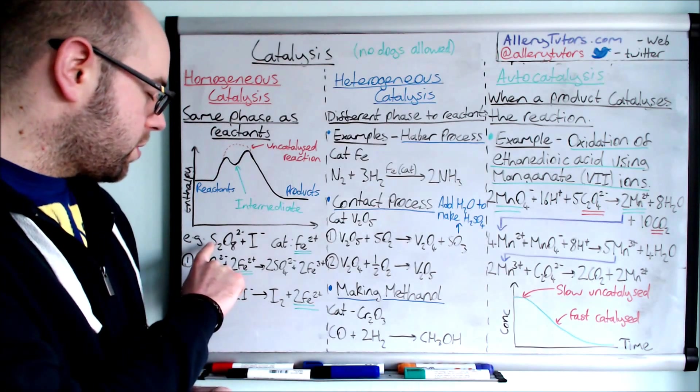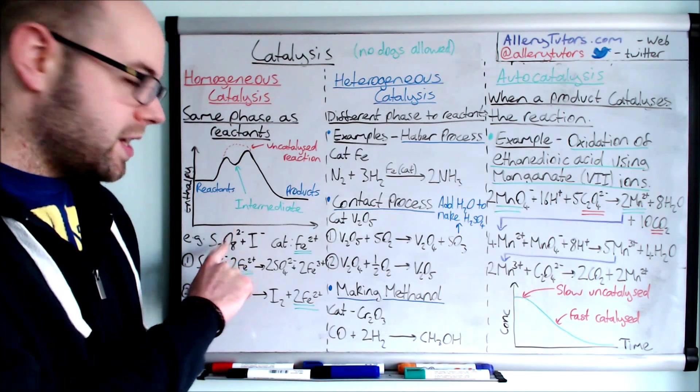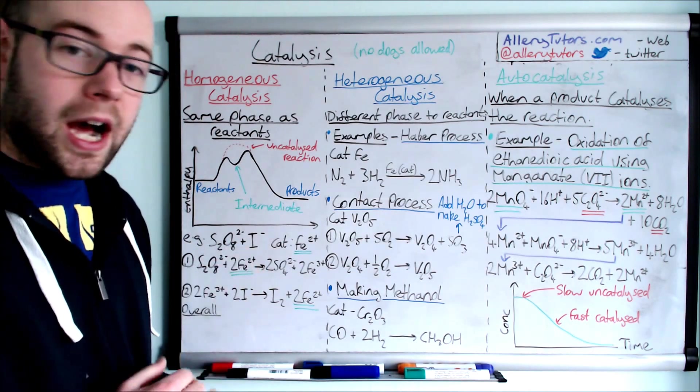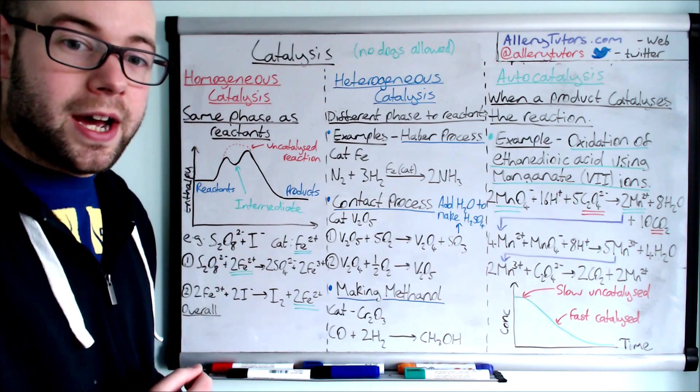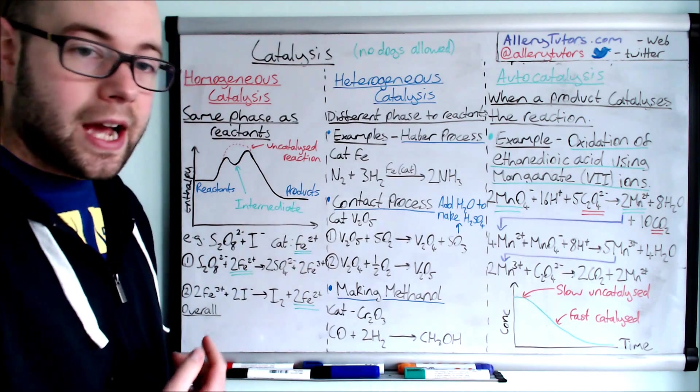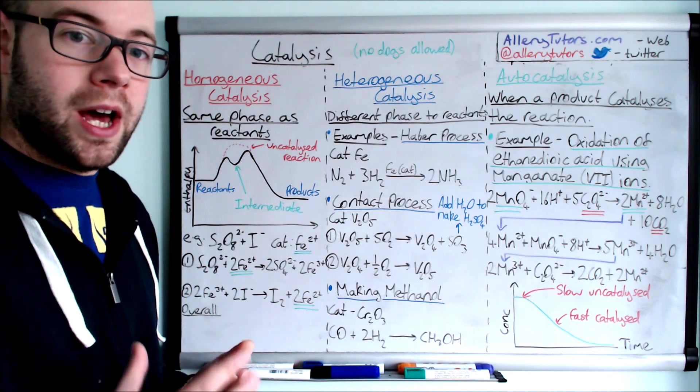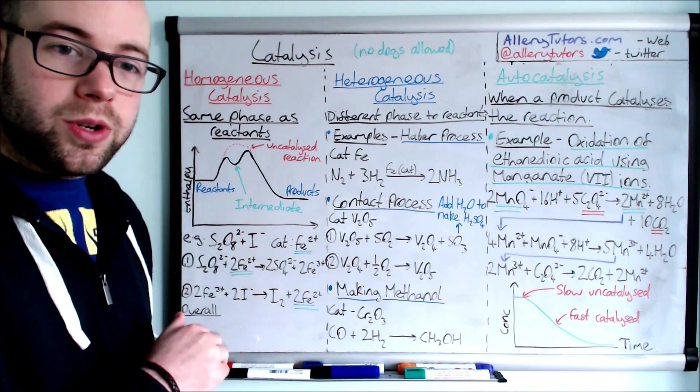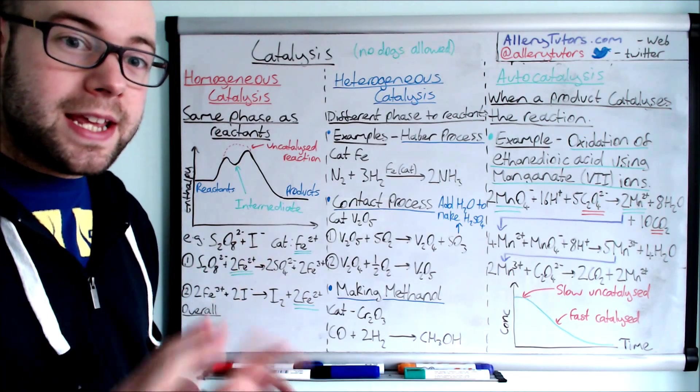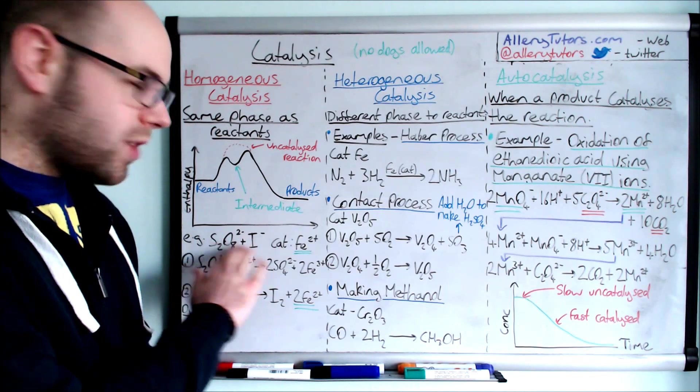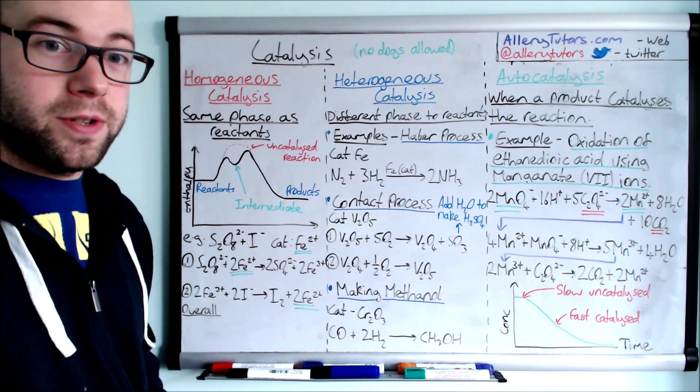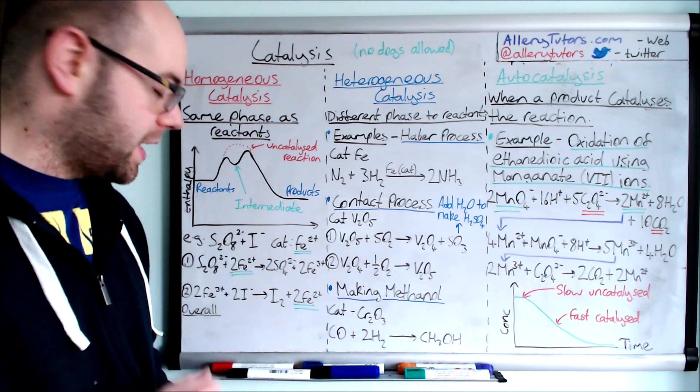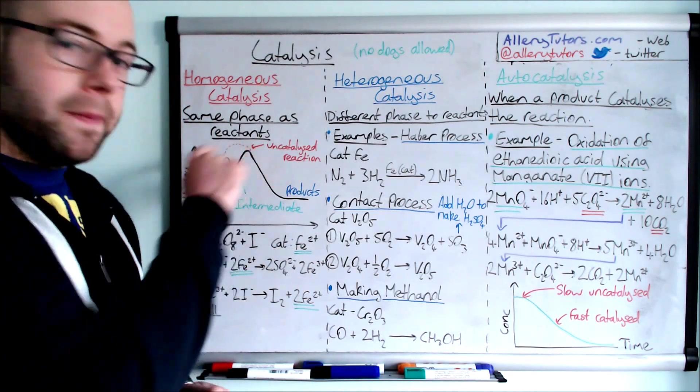For example, we're going to use peroxodisulfate S2O8 2- which reacts with iodide ions I-, and the catalyst we're going to use is iron 2+ Fe2+. This is in solution. Remember all ions are in solution. Normally these two wouldn't react - they're both negatively charged, they don't want to be anywhere near each other. So trying to get these to react without the catalyst is pretty much impossible.